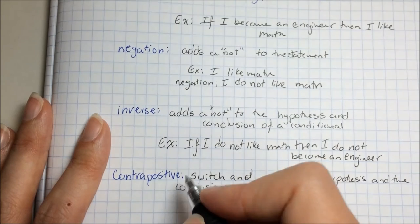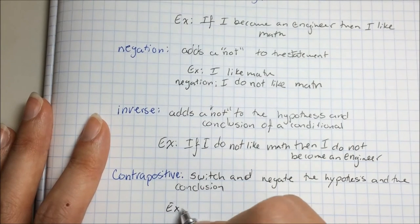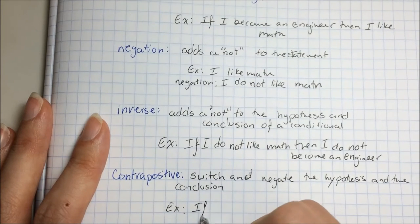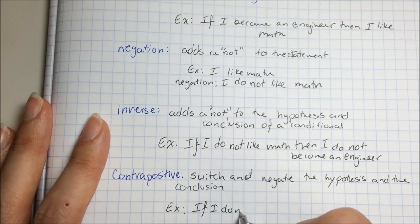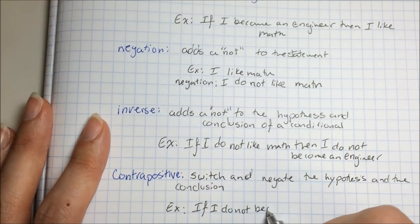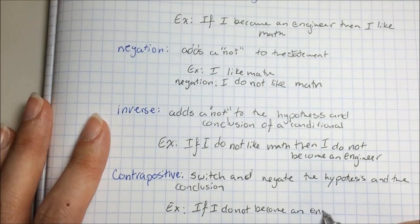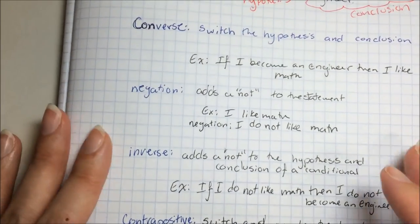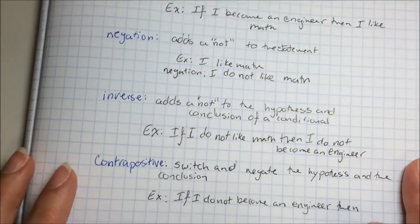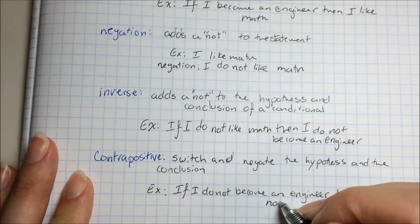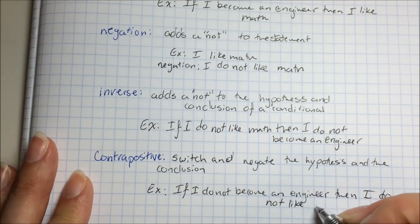So going back to our example, the conclusion was I become an engineer. So if I do not become an engineer, then, and our previous hypothesis was I like math, then I do not like math.